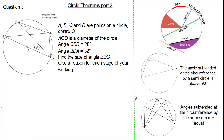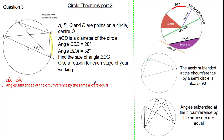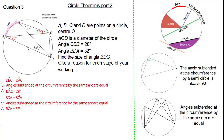Hopefully you'll be able to spot a circle theorem. Angle DBC is the same as angle DAC, because these angles share the same arc. So our reason is: angles subtended at the circumference by the same arc are equal. This means angle DAC must be 28 degrees. Now, angle BDA is the same as angle BCA, because these angles also share the same arc, so angle BCA must be 32 degrees.